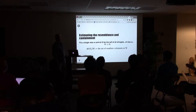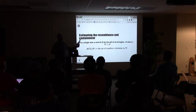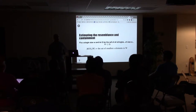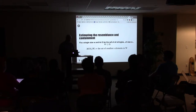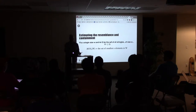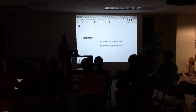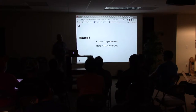There's a clarification: the paper says 'fix a shingle size lowercase w and let omega be the set of all shingles of size w.' So omega is the set of all shingles of one fixed size — not all sizes. You pick one shingle size for the whole exercise. Omega would still be an infinite set unless they're restricting the alphabet in advance, but it only has one size.